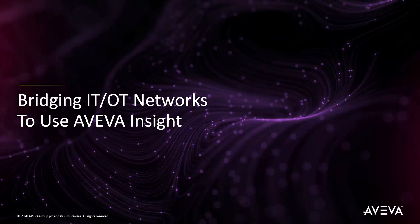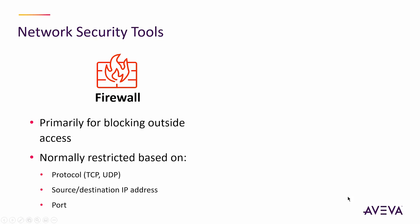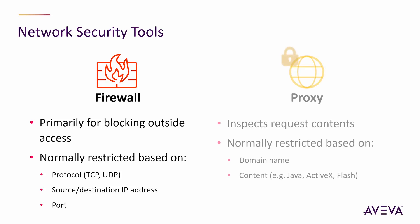One of the main things you have to overcome to be able to do that is the network architecture that you're dealing with. So let's talk about some of the common network security tools. A firewall is typically used to block outside access to your network at the corporate level and on the control network. It's mostly about inbound access, but you can also block outbound access. It's typically restricted based on protocol and ports, can be restricted by IP address, but typically is not — that's not reliable on the internet. It's better to use name-based restrictions, and that's where a proxy comes in.